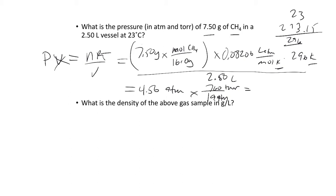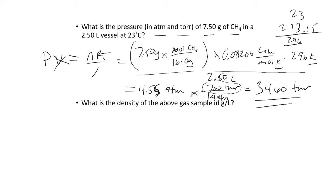Let's come back and verify: 7.5 divided by 16, times 0.08206, times 296, divided by 2.5 — that's 4.55 atm. And 4.55 times 760 to convert to Torr gives 34,600 millitorr, or about 3460 Torr. If you want pressure in a unit other than atm, I'd recommend calculating in atm first and then converting afterwards.